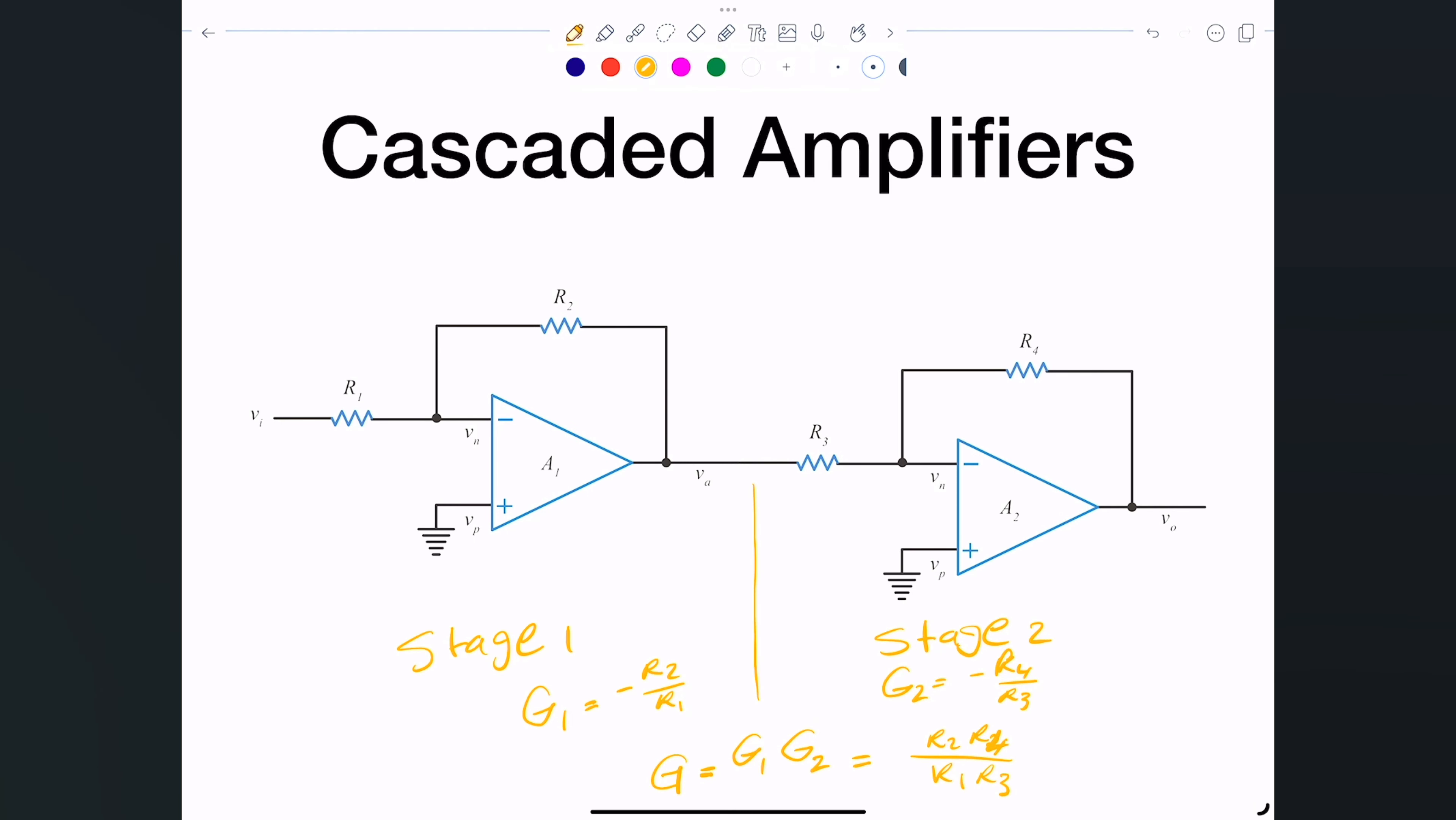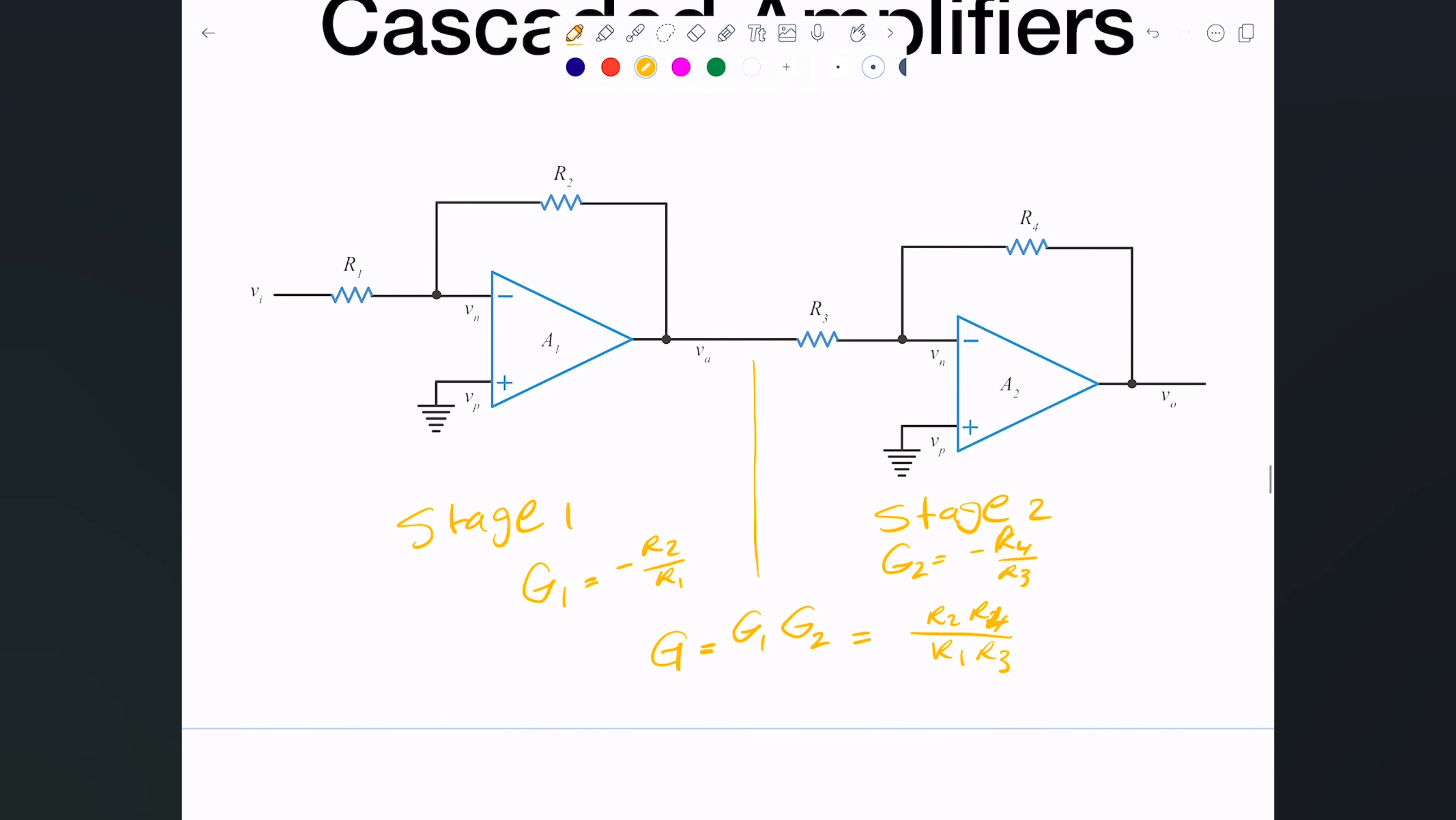The proof would be simply, let's take a look at how does the output relate to the input. So we'll take a look first at Va and we write some nodal analysis. Again, our assumption is that this In is zero, this Ip is zero, this In is zero, and this Ip is zero.